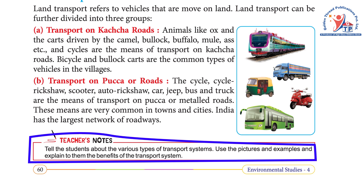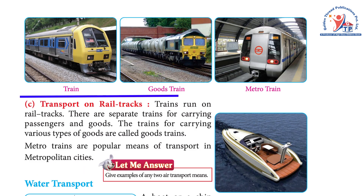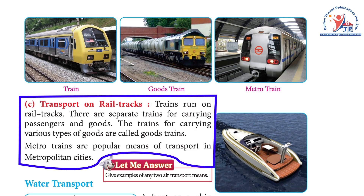C) Transport on rail tracks: trains run on the rail tracks. There are separate trains for carrying passengers and goods. The trains for carrying various types of goods are called goods trains. Metro trains are popular means of transport in metropolitan cities.